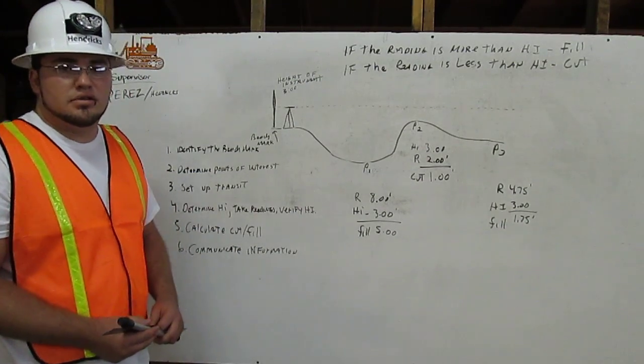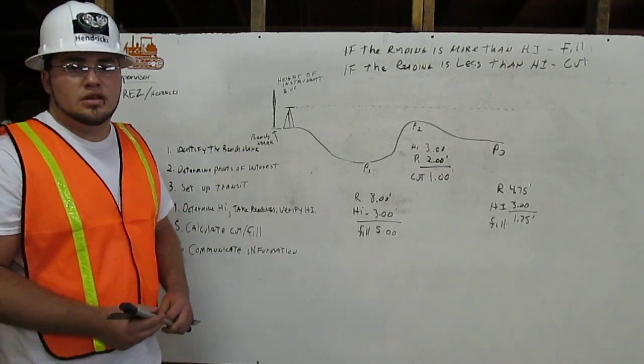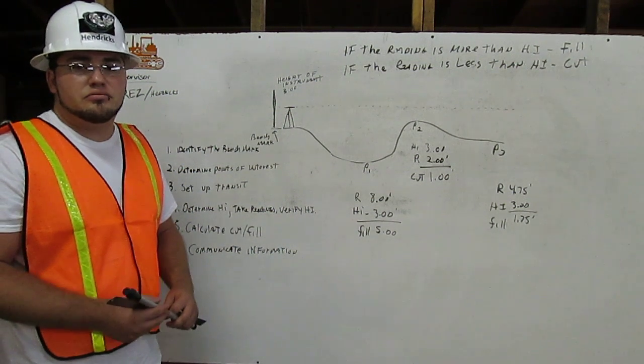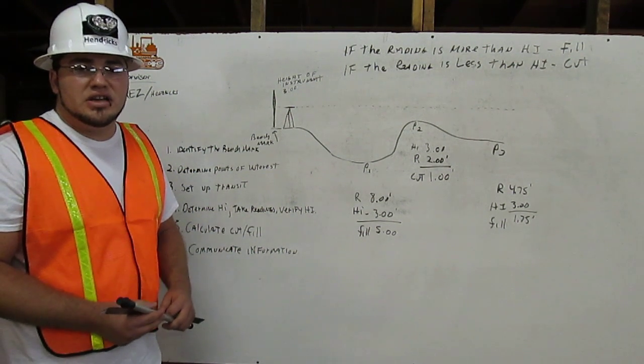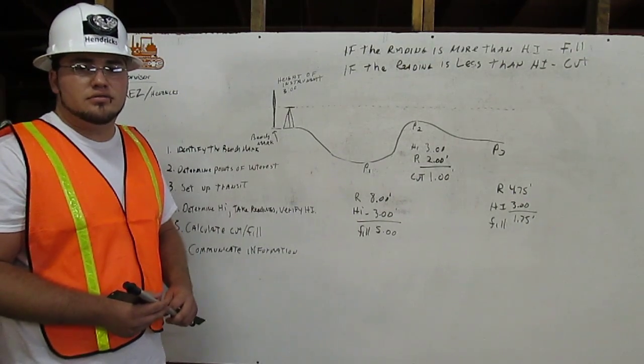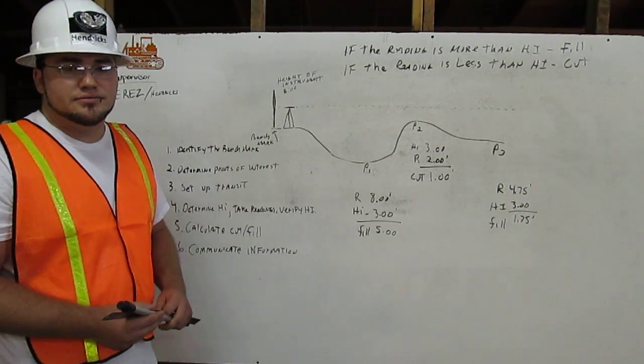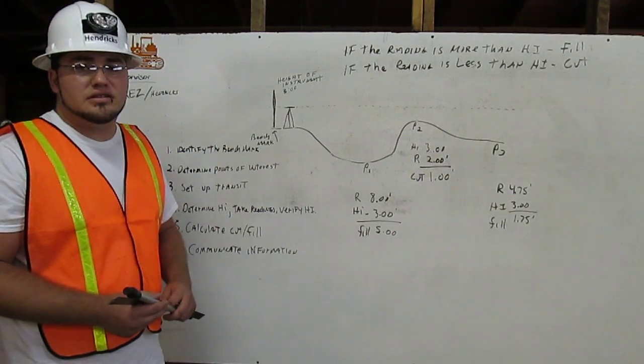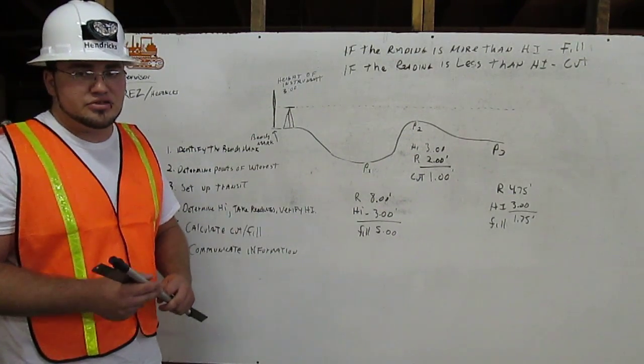I am Joseph Hendricks, a certified grade checker. To be certified means I can read an engineer's ruler, set up a transit level, and do grade checking. I'm going to show you the grade checking process. It is done in six steps.